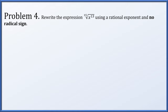Problem 4: rewrite the expression the 15th root of x to the 13th using a rational exponent and no radical sign. The 15th root of something is that thing to the 1 over 15 power, so we have x to the 13th all raised to the 1 over 15. Using properties of exponents, something to the 13 raised to the 1 over 15 power is x to the 13 times 1 over 15, or simply x to the 13 over 15.